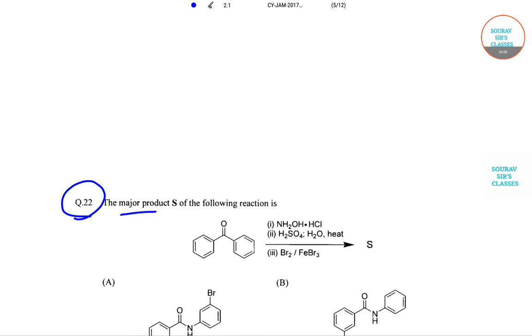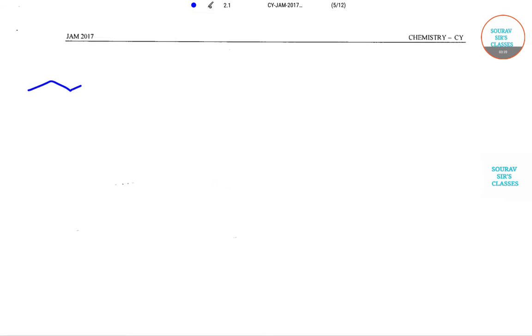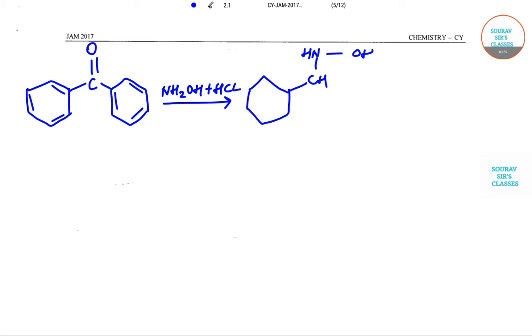Now the next question is question number 2, and it says the major product of the following reaction will be. So let's see how we are going to do this. So let me start drawing this: I'll write the carbon, and then we have oxygen. So you add NH2OH plus HCl. So now this part will have something like this: this is CH, this is H, and this is hydroxide.